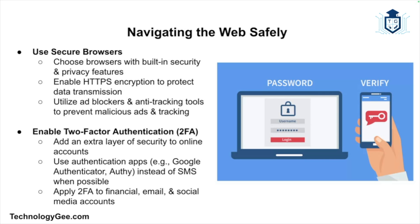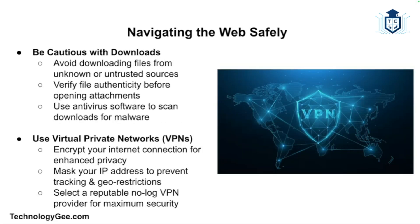Given the complexities and risks associated with the different layers of the internet, it is essential to navigate the web safely. Use secure browsers with privacy features such as HTTPS encryption and ad blockers for everyday surface web browsing. Enable two-factor authentication on online accounts, especially those storing sensitive information. Avoid downloading files from untrusted sources, as they may contain malware. Use VPNs to protect your online activity by encrypting your internet connection and masking your IP address.